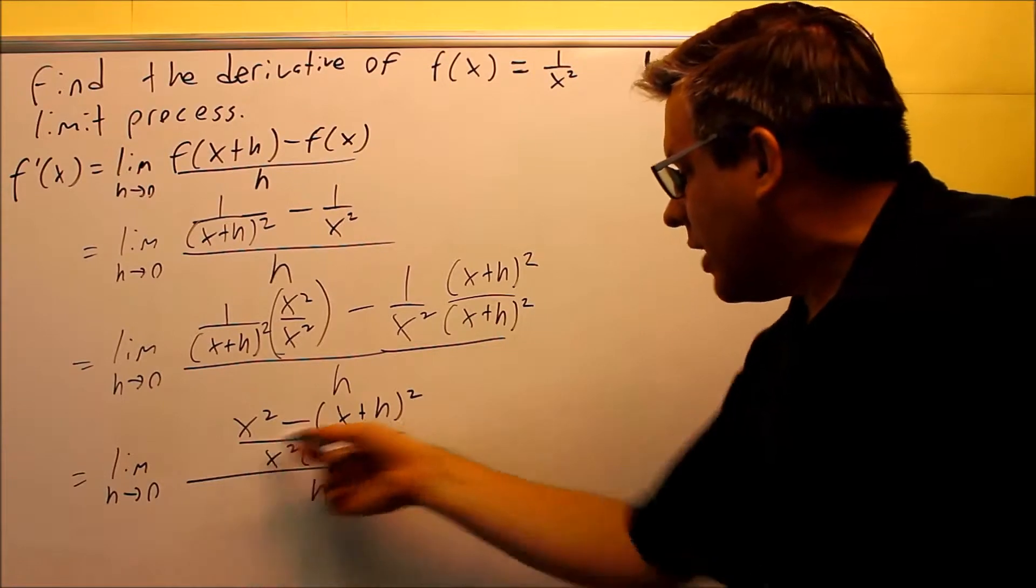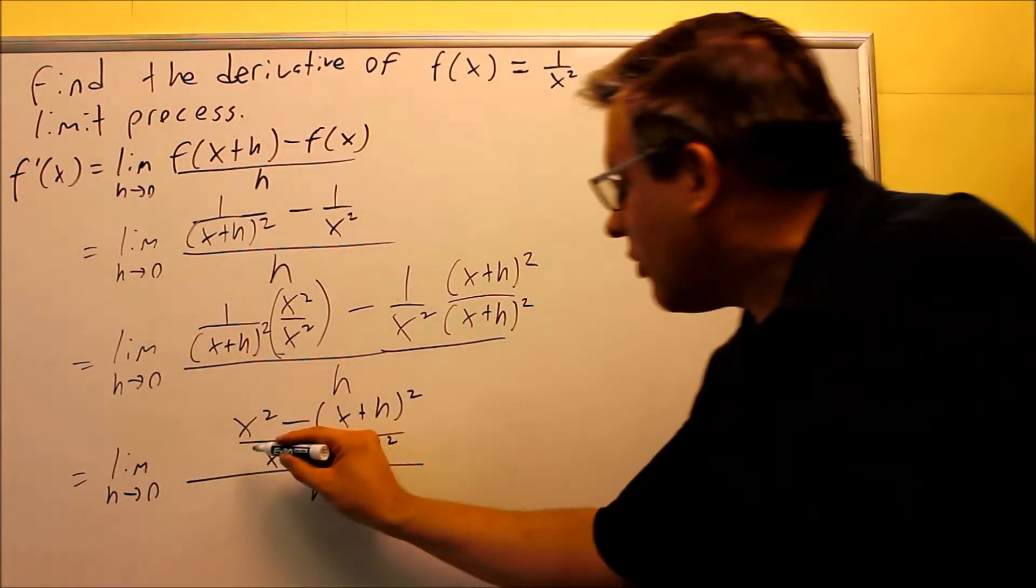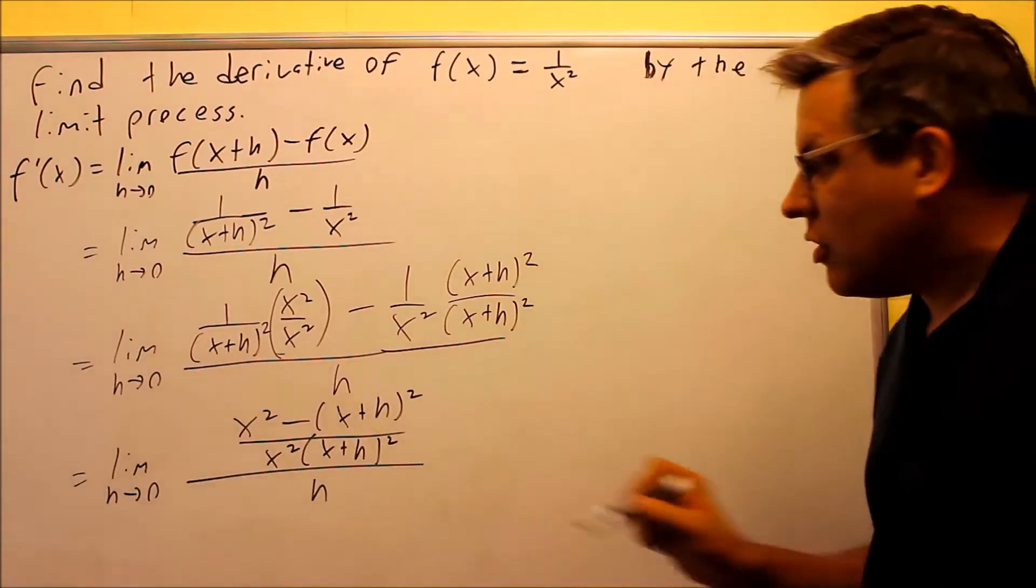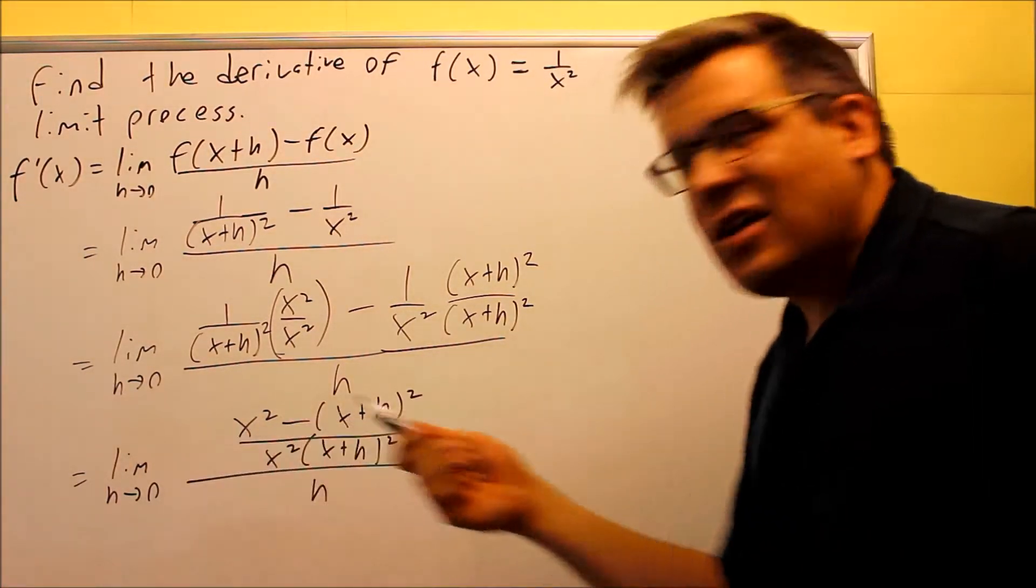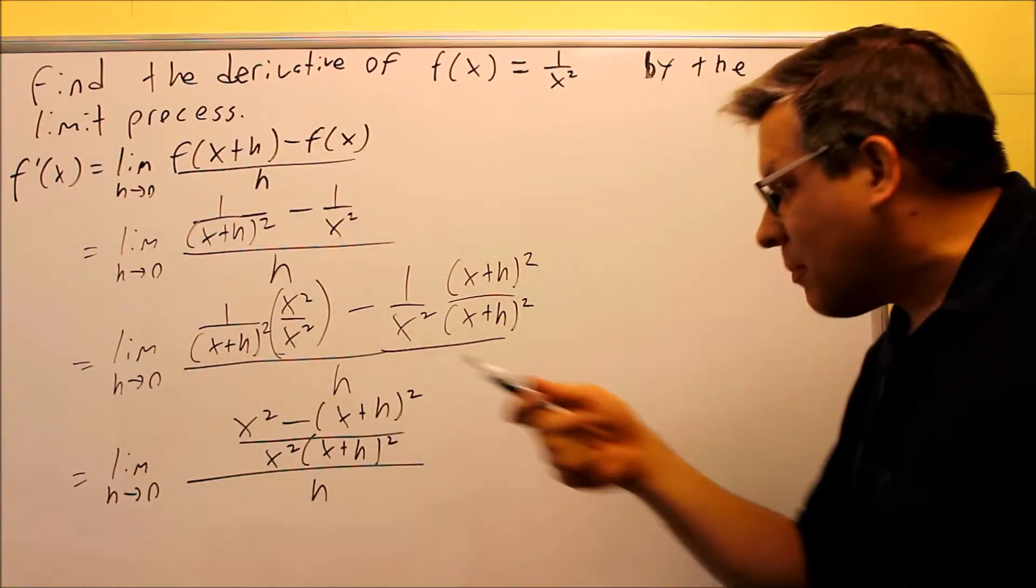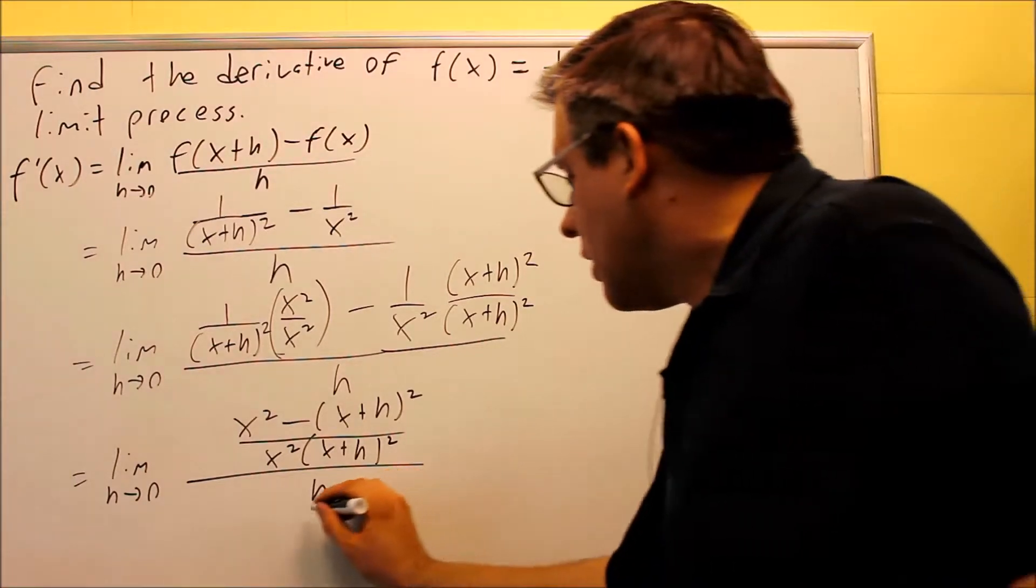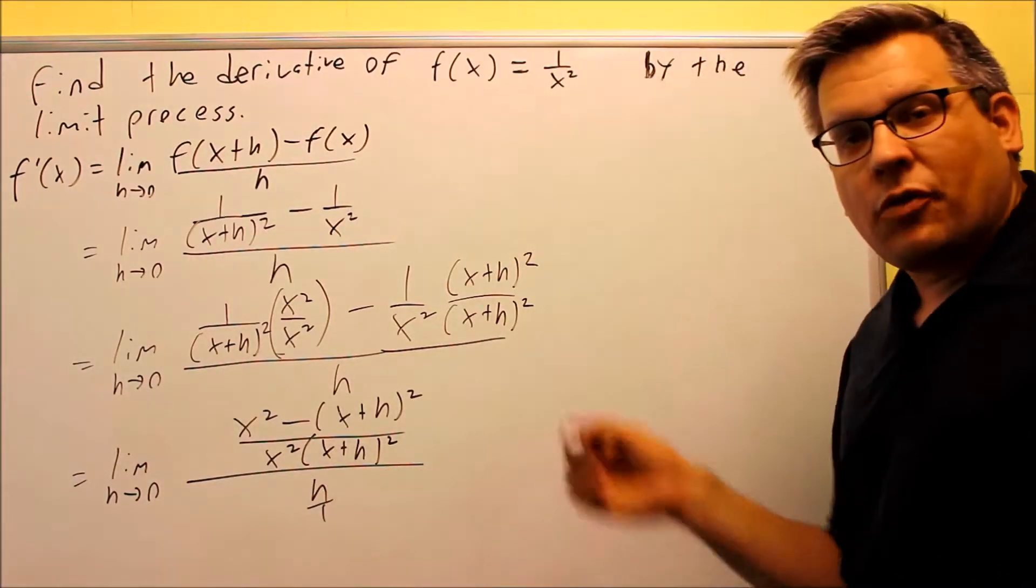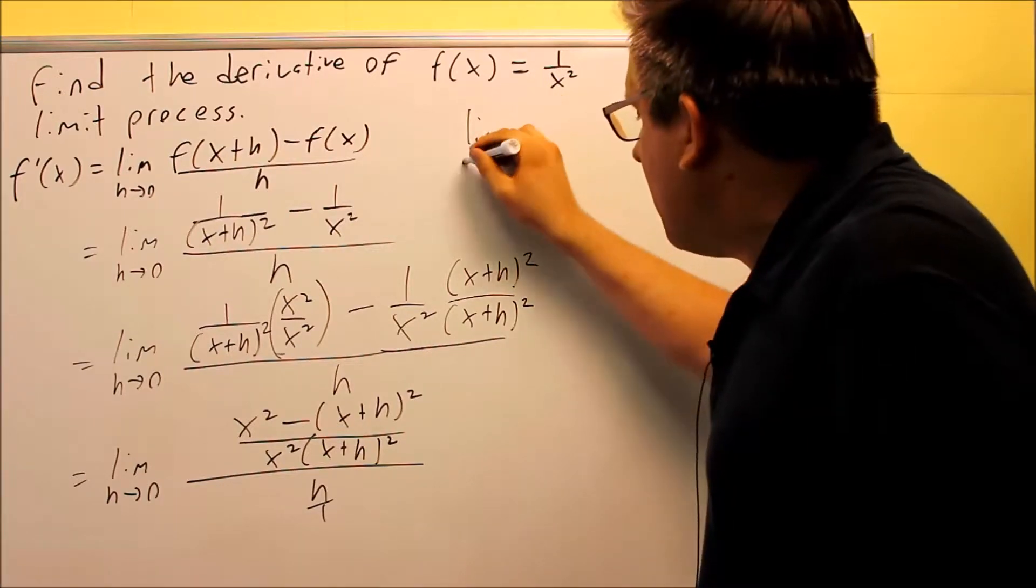So the question is, do I need to multiply the bottom one? No, you actually don't have to. You can actually leave it together. It's going to be a lot easier if you just leave it together in the factored form, because eventually we're going to be putting in a zero for h anyway, which that part's going to be made easier. So for right now, I'm not going to worry about doing that. I have h over 1, which I'm going to flip the fraction, and the h is going to end up on the bottom.